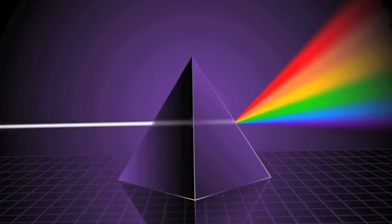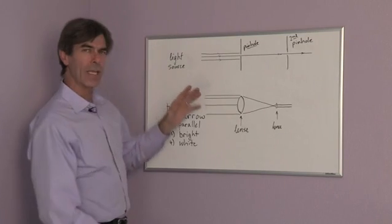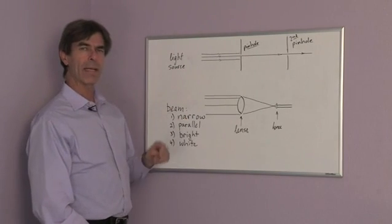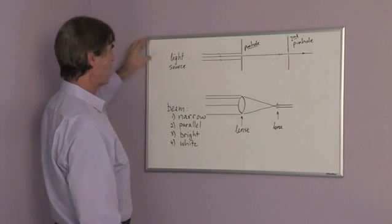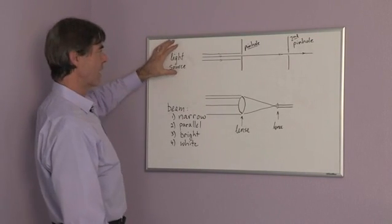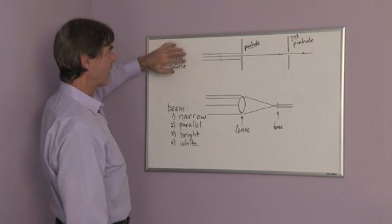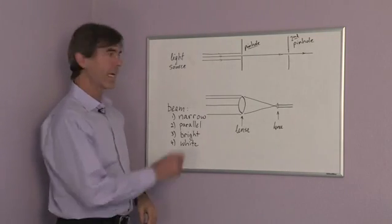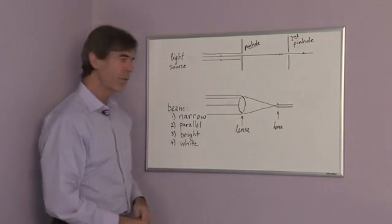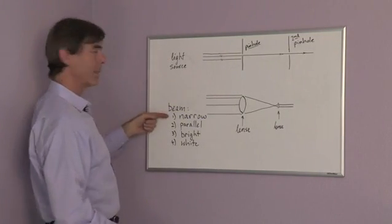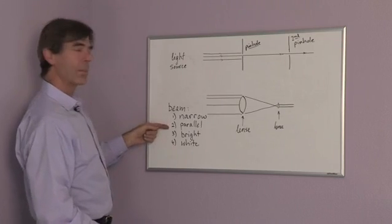Now, one way to get a narrow beam is to use a pinhole. You can make a pinhole in a shoebox and then use, let's say, the sun as a light source. Light hitting the pinhole, only the light going right through the hole is allowed to go through, so we're making our beam narrow.